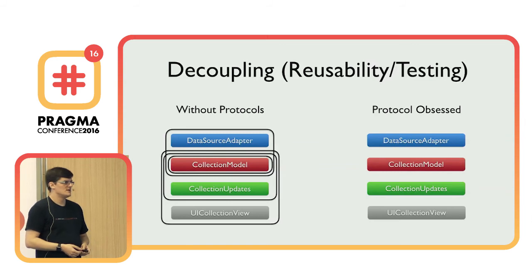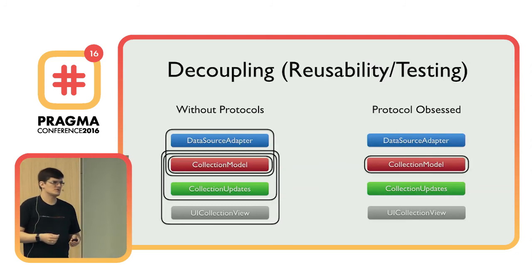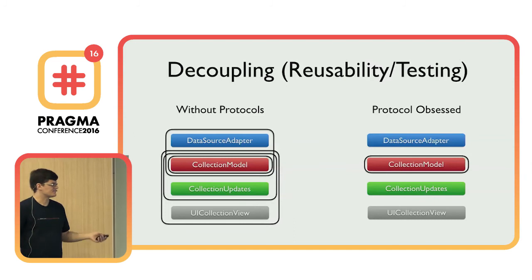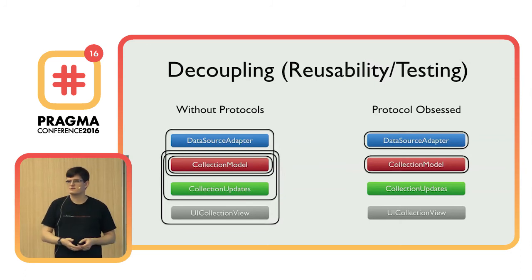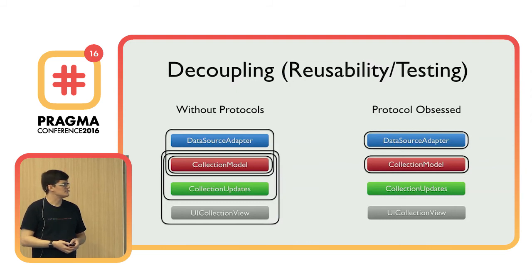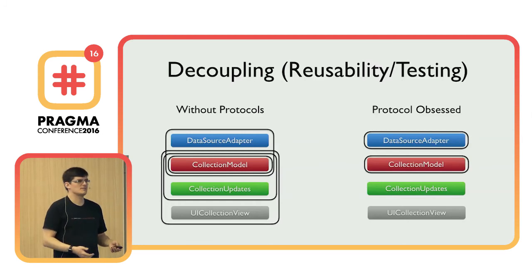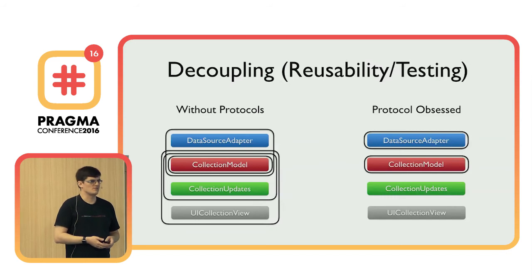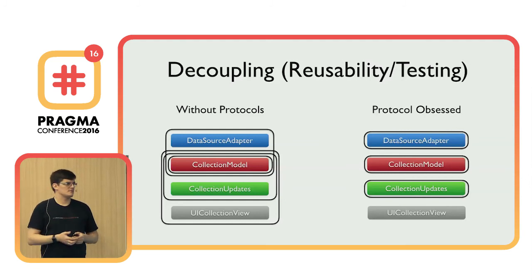In the protocol-obsessed version, we can use the collection model in isolation. The data source adapter can accept any implementation of the collection model protocol — we can simulate a collection model for tests and test the data source adapter in isolation. The same applies to collection updates: to construct them, I don't need a concrete collection model, only something conforming to the right protocol. The perform method only requires conformance to a certain target protocol, so if we implement that target protocol on a table view, we could apply the same thing to a table view as well.